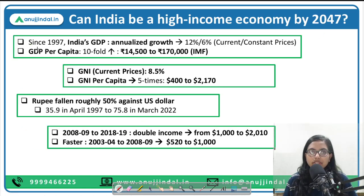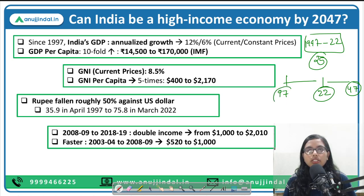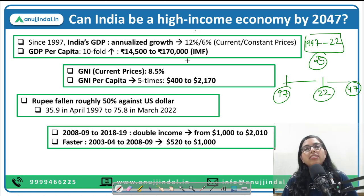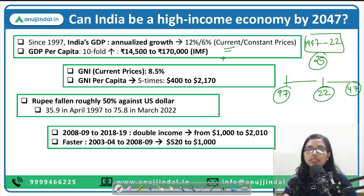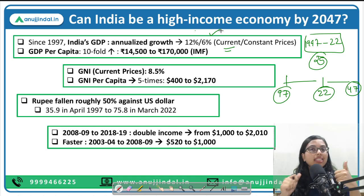Since 1997, looking at the past 25 years from 1997 to 2022, India's compounded annual growth rate has been around 12% at current (nominal) prices, and around 6% at constant prices. The 12% nominal rate reflects both changes in prices and changes in production, while the 6% constant price rate shows the actual increase in goods and services production. Based on this, our GDP per capita has increased 10-fold — from around ₹14,500 in 1997 to around ₹1,70,000 today according to IMF data.